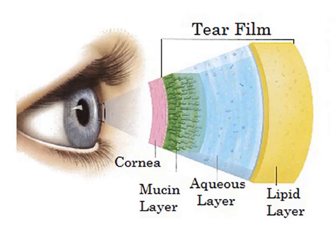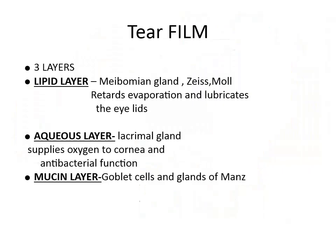The tear film, also called the pre-corneal tear film as it lies above the cornea, is divided into three layers. The first one is the lipid layer, then you have an aqueous layer, and then you have a mucin layer. The lipid layer is mainly secreted by the meibomian gland, Zeis, and Moll.